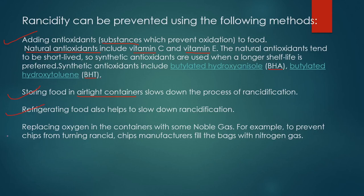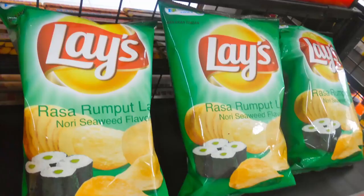Finally, we can prevent rancidity by replacing oxygen inside containers with a noble gas. The best example is chip packets, which are filled with nitrogen gas. Nitrogen is used so that the chips do not become rancid and their shelf life is extended. If the packet contained normal air with oxygen, the chips would spoil within a few days and the taste would change.